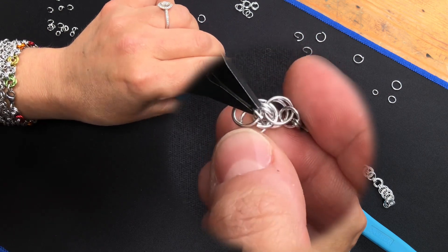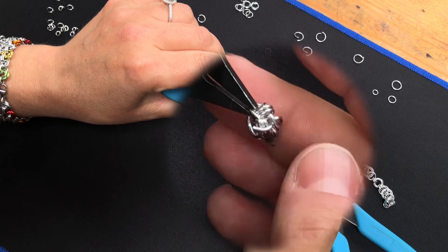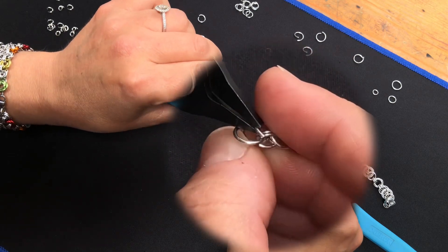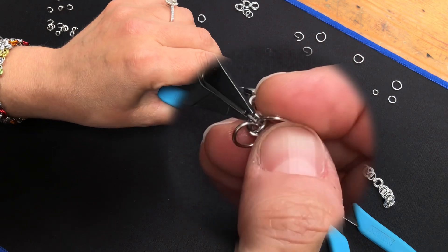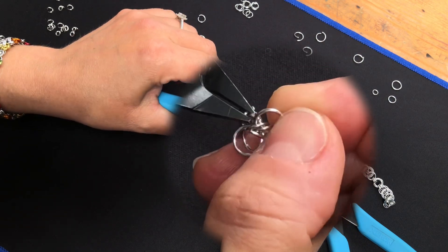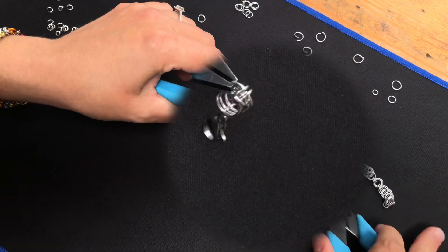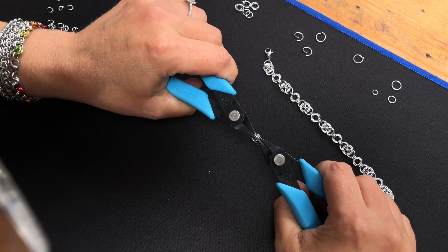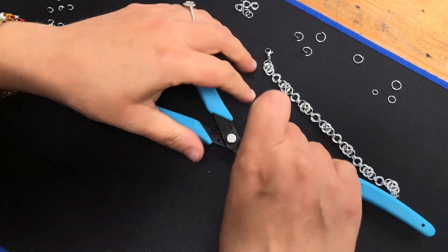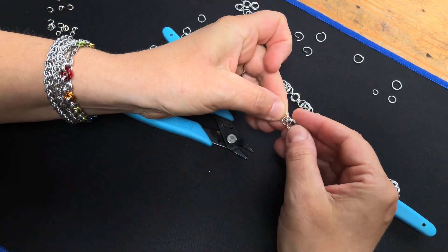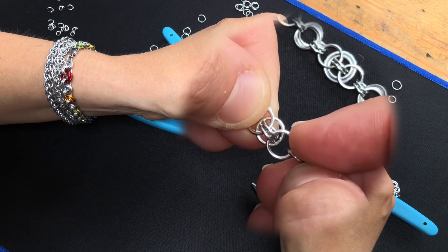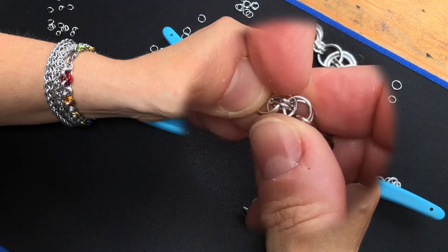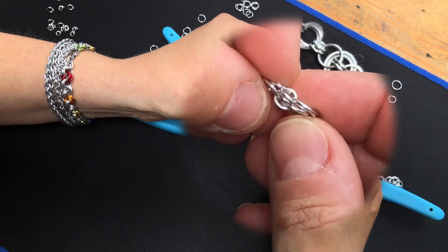we want to do the same to these two medium rings here. So a bit fiddly to start off. I find folding that one backwards helps. And then close it up. So what you've got is your two medium rings, your small rings, and then a medium ring circling the small rings, sandwiched in between those there.